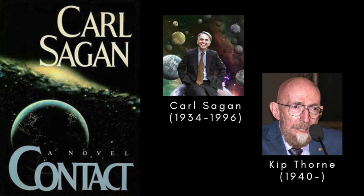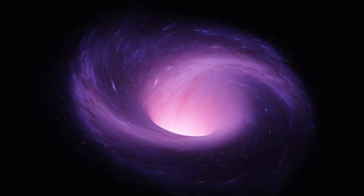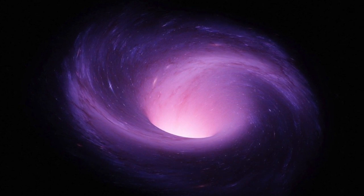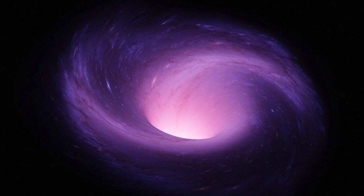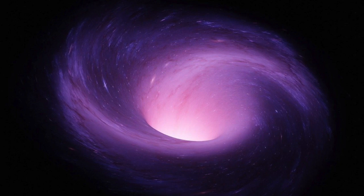Interest in so-called traversable wormholes gathered pace following the publication in 1987 of a paper by Michael Morris, Kip Thorne, and Yuri Yurtsever — MTY — at Caltech. The paper stemmed from an inquiry to Thorne by Carl Sagan, who was mulling over a way of conveying the heroine in his novel Contact across interstellar distances at trans-light speed. Thorne gave the problem to his PhD students, Morris and Yurtsever, who realized that such a journey might be possible if a wormhole could be held open long enough for a spacecraft or any other object to pass through. MTY concluded that to keep a wormhole open would require matter with a negative energy density and a large negative pressure.